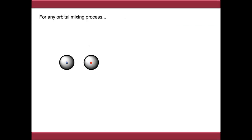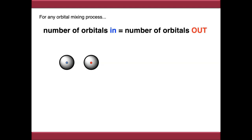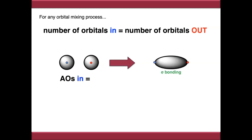In the first video I told you that for any orbital mixing process, the number of orbitals that goes into the process has to equal the number of orbitals out. In the second video we did things like mixing two atomic orbitals together and producing one molecular orbital out, so clearly something wasn't quite right. We covered options including sigma bonding orbitals, sigma star antibonding orbitals, pi bonding orbitals, and pi star antibonding orbitals. The way we fix this is that we have to mix everything both in phase and out of phase.